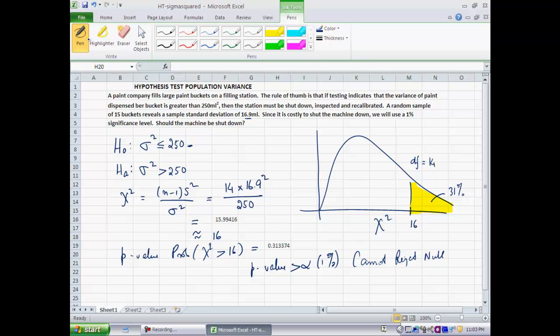In fact, even if your threshold was 5%, the p-value that you just got, the 31%, is so high that you would still end up with the same conclusion.